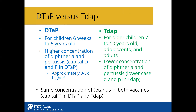Now we will look at DTaP versus Tdap. DTaP is for children 6 weeks to 6 years old, and it has a higher concentration of diphtheria and pertussis, hence the capital D and P in the name — approximately 3 to 5 times higher than what is in the Tdap vaccine. Tdap is for older children 7 to 10 years old or adolescents and adults, and it has a lower concentration of diphtheria and pertussis, hence the lowercase d and p. Both have the same concentration of tetanus, which is why there is a capital T in both DTaP and Tdap.